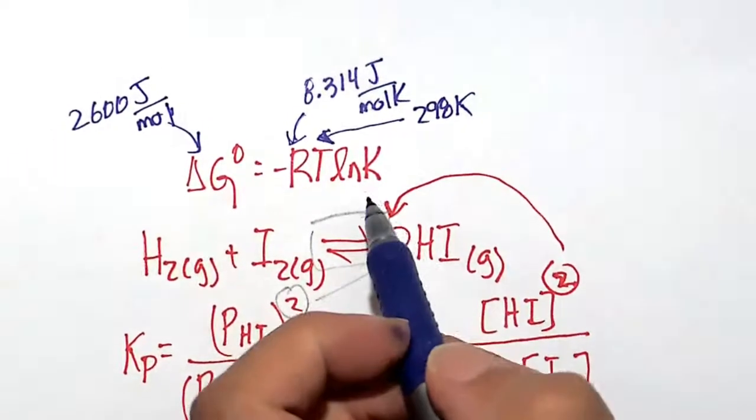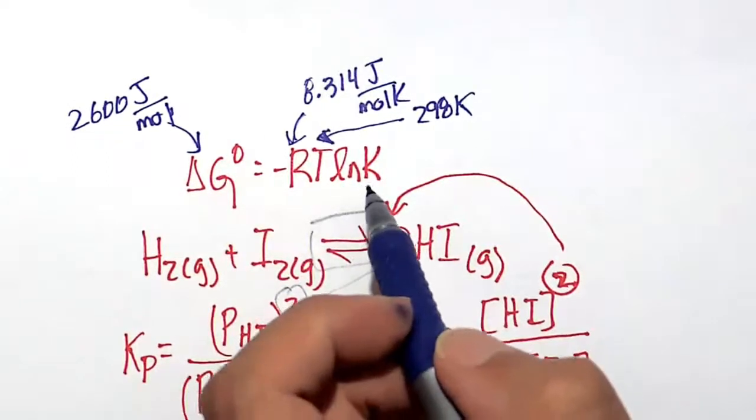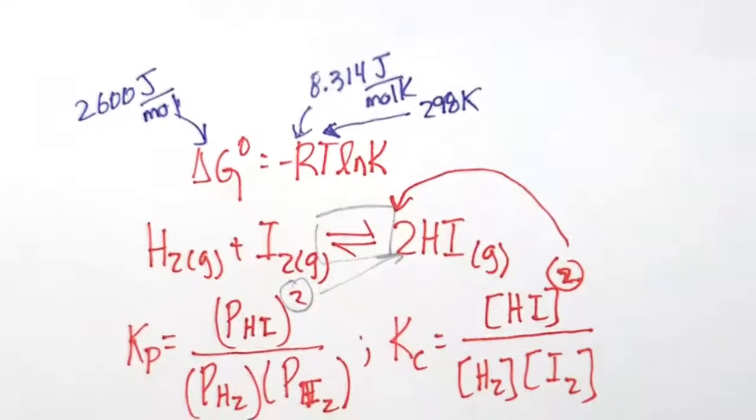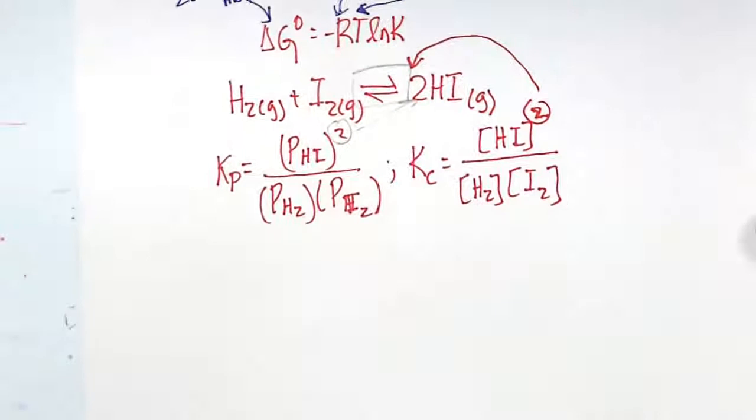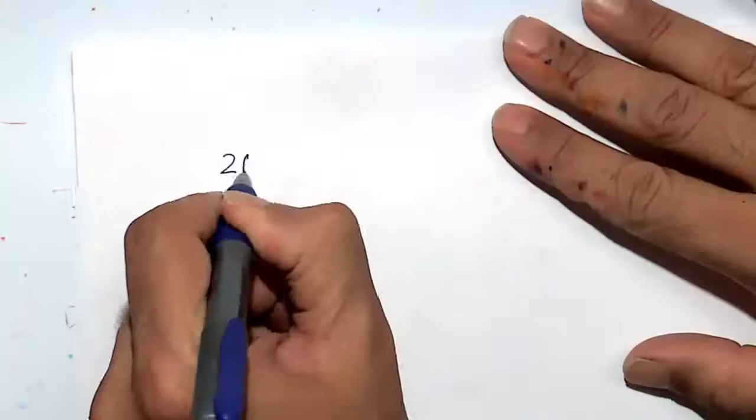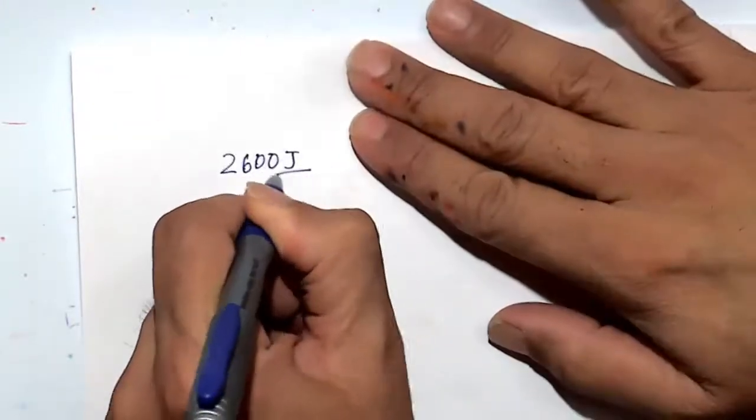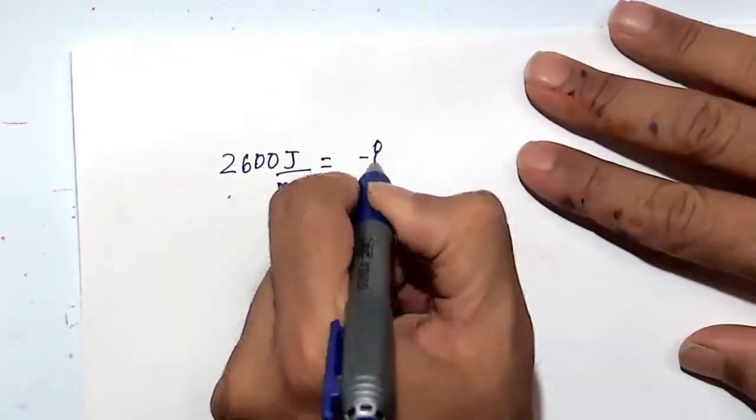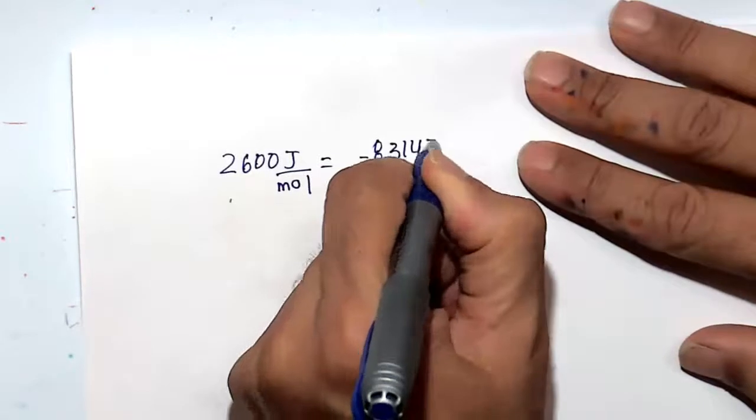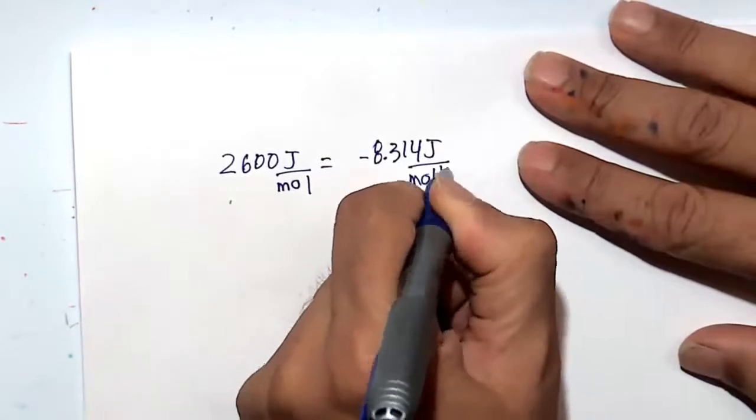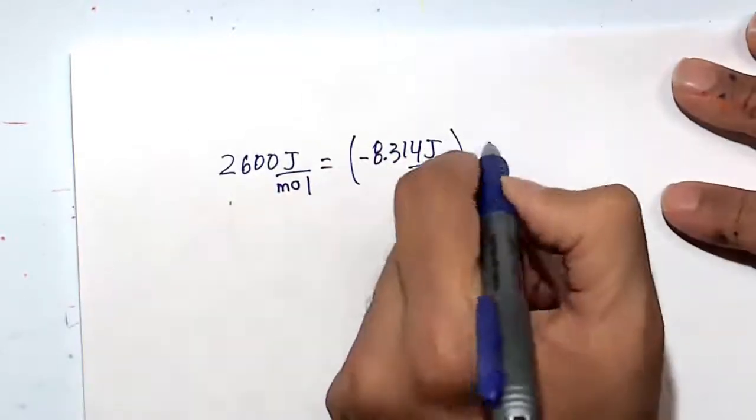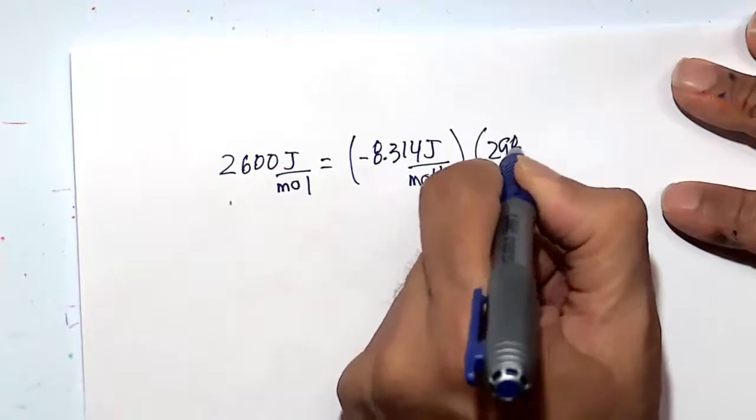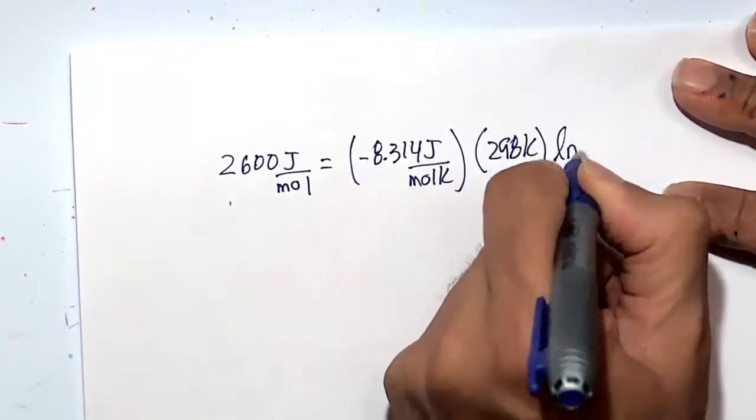All right, so now all we've got to do is isolate K and get it out of the natural log by taking the inverse natural log, which is E. So let's go ahead and do that here. So we've got 2,600 joules per mole, delta G equals minus RT, so minus 8.314 joules over mole Kelvin, minus R times T, which is 298 Kelvin, times natural log of Kp.